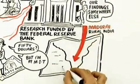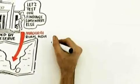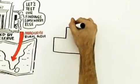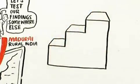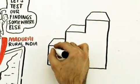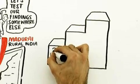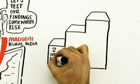Let's take the experiment to Madurai, India, rural India, where $50, $60 is actually a significant sum of money. So they replicated the experiment in India roughly as follows: